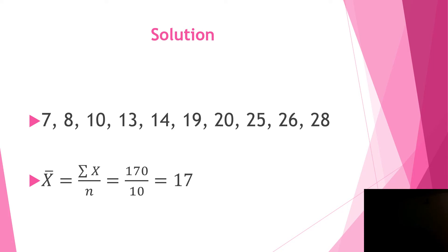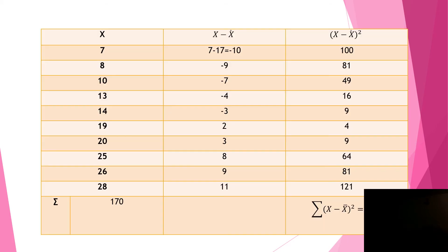x̄ is the sum of all observations divided by the number of observations. If we sum all observations, we get 170, and we divide by 10 — the number of observations — so the arithmetic mean x̄ is 17.